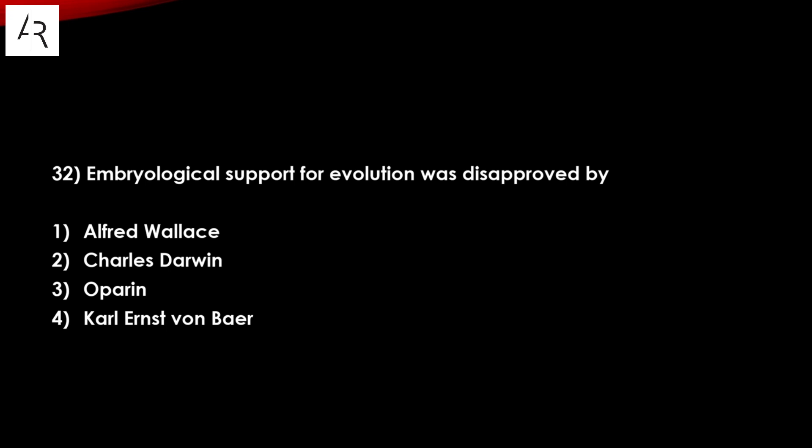Question number thirty-two: embryological support for evolution was disapproved by Alfred Wallace, Charles Darwin, Oparin, or Karl Ernst von Baer? Option number four — Karl Ernst von Baer — is the answer.